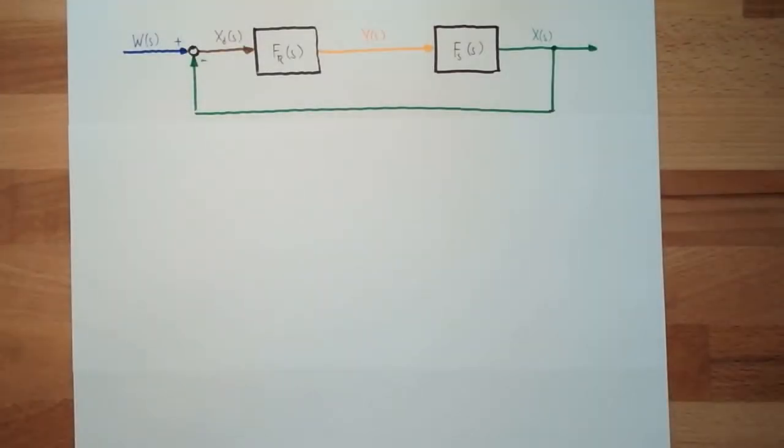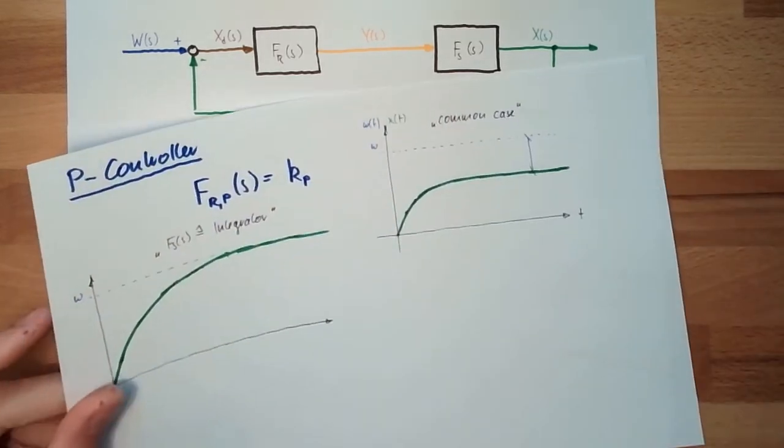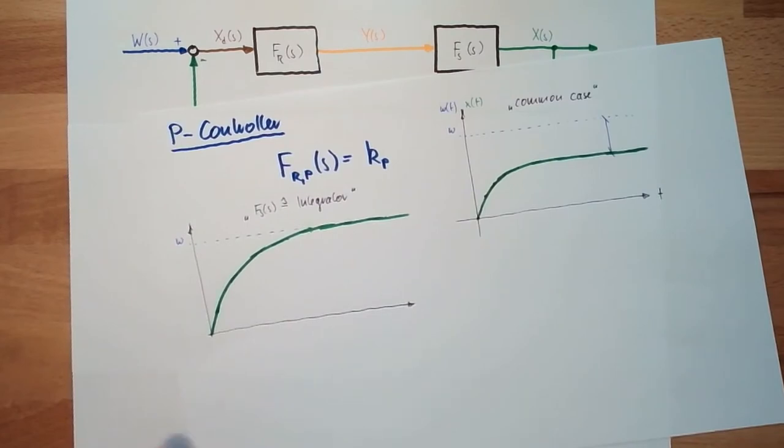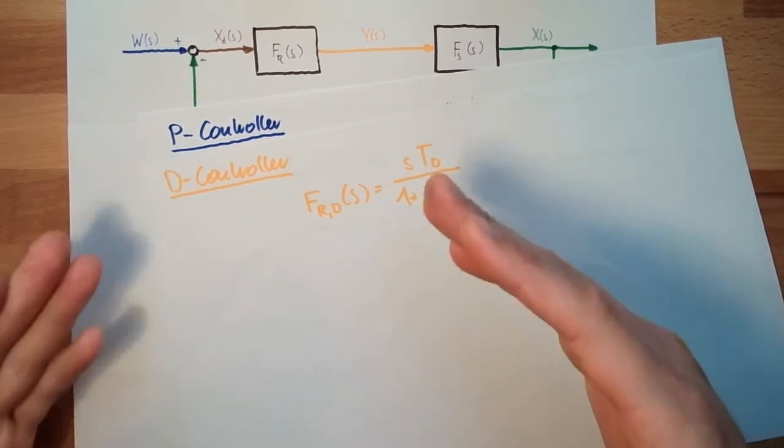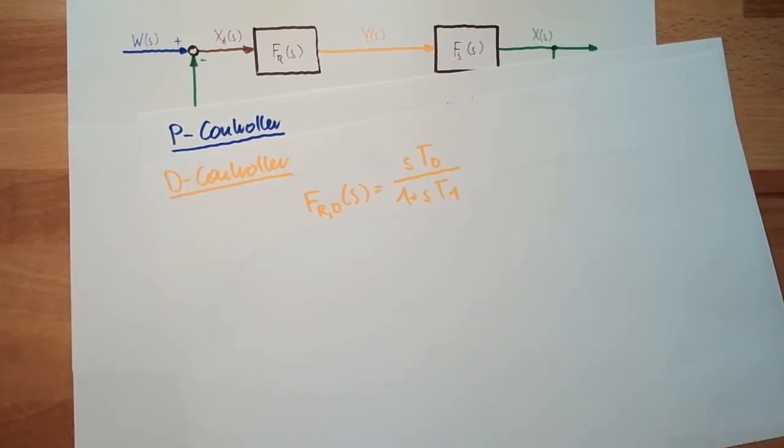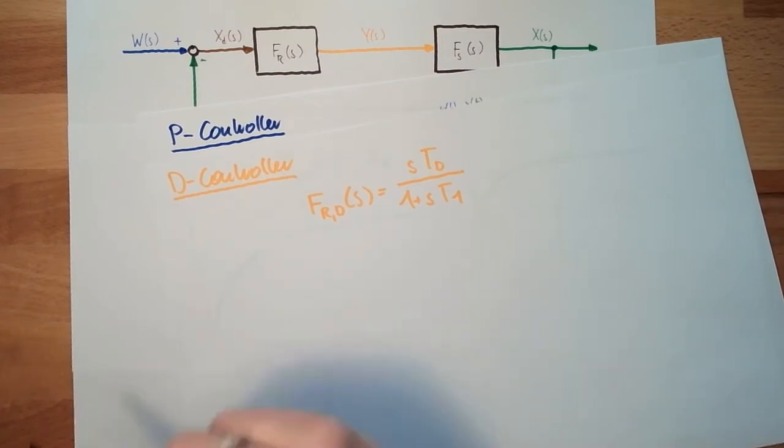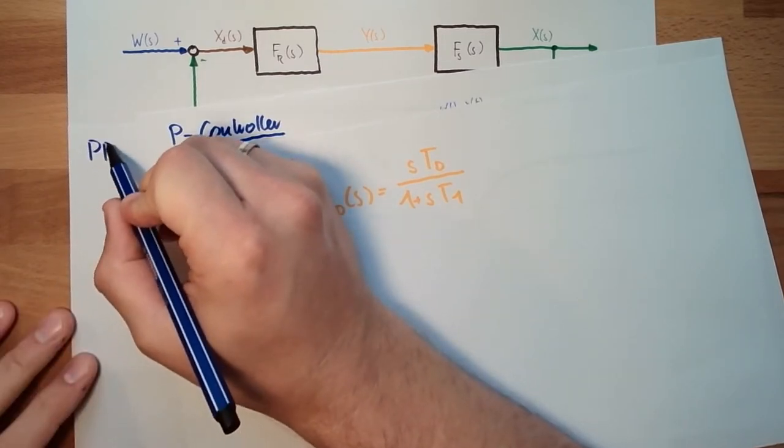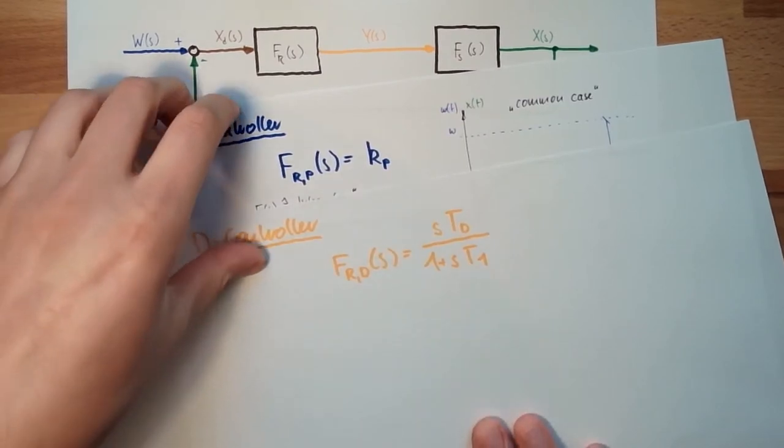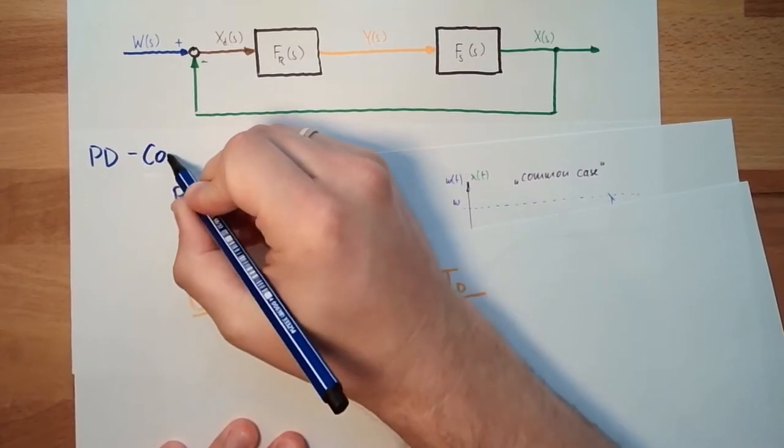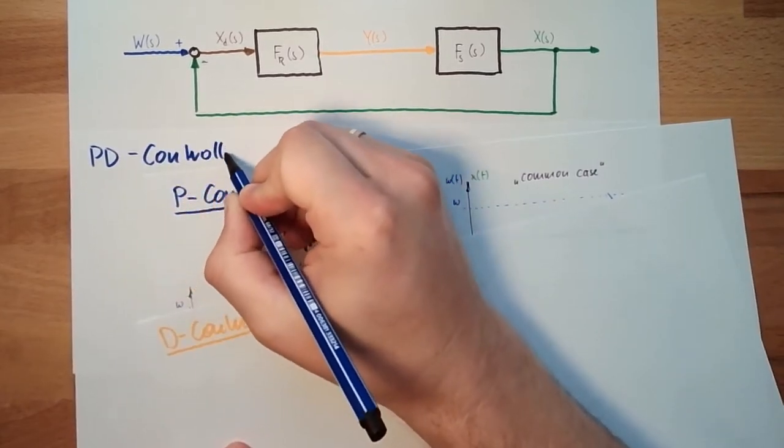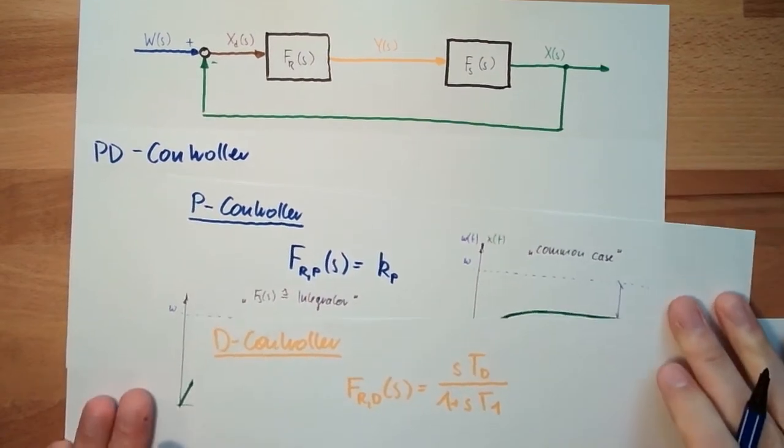Hello and welcome back to our second video about combined elements or combined controllers. Last time I already said we're going to combine a P element again. Last time we combined it with an I element, now we combine it with a D element. And the resulting controller is of course called PD controller. It's not the police department, it's a proportional differential controller, PD controller.